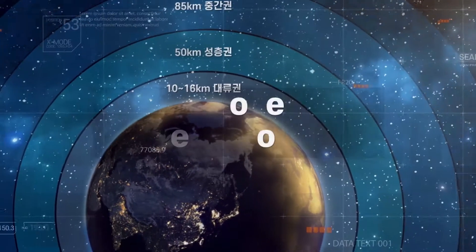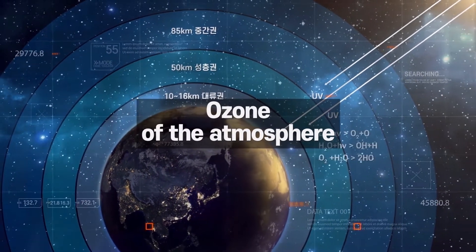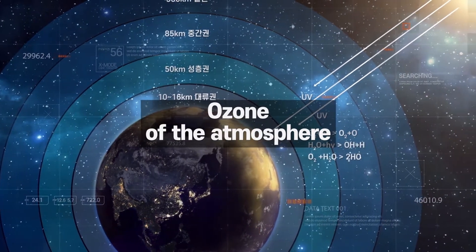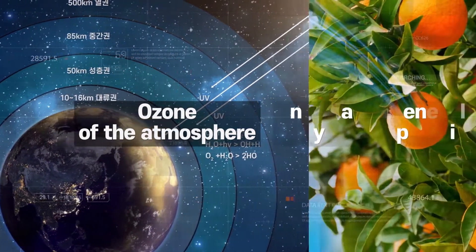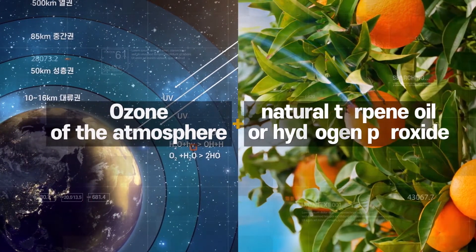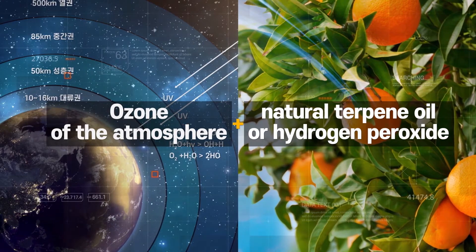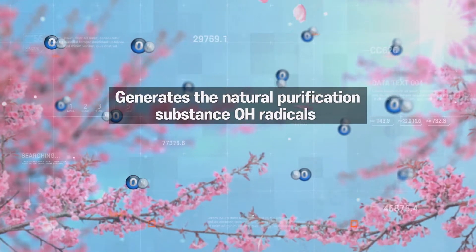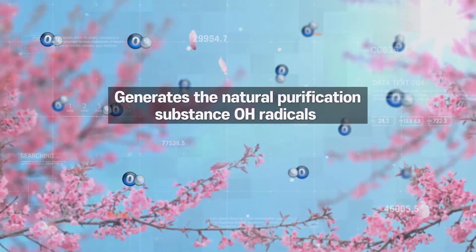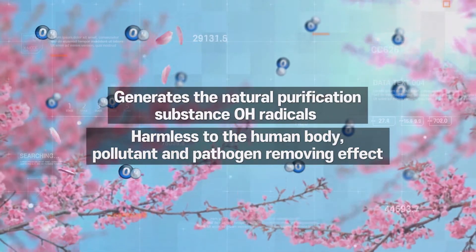OH radicals are natural purification substances that generate on their own when organic turbine oil components from plants, fruits, or hydrogen peroxide meet a minute amount of ozone naturally generated from the sun's UV rays. They are harmless to the human body and have a pollutant-removing effect.